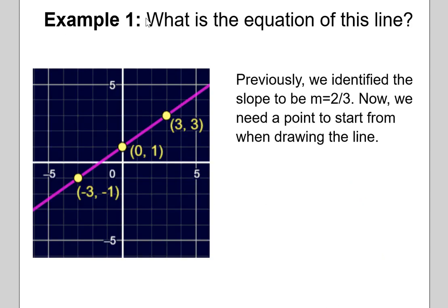Let's return to example 1. What is the equation of this line? This is my same line from the beginning, with the points negative 3 comma negative 1, 0 comma 1, and 3 comma 3. We figured out that the slope is 2 thirds, but we didn't write out the actual equation of the line, which would describe any set of coordinates — Y in terms of X. We can do that now because we figured out that when X is 0, you get the Y intercept. Here, when X is 0, Y is 1, so that's the Y intercept.